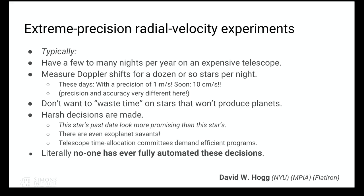Radial velocity experiments give you a lot more information. Typically they involve many nights per year on a very expensive ground-based telescope, measuring Doppler shifts for a few stars every night. The key thing about these surveys is because they're so data-starved — only a few stars on a few nights a year — they don't want to waste time on stars that won't produce planets. So people operating these surveys make very harsh decisions: if a star looks noisy, they drop it; if it shows no signs of planets, they drop it; if it looks like a binary, they drop it.